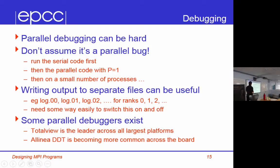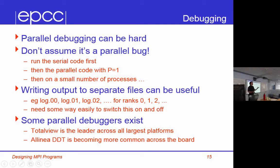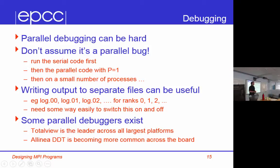Parallel debugging can be hard. First thing: don't assume it's a parallel bug. I've seen people spend weeks trying to find a bug because they assumed it crashed on 128 processes due to some complicated parallel issue, and it was just a normal bug — they were reading in the wrong file or hadn't initialized a variable. If your code crashes on a thousand processes, go back to the code that works. Run the serial code first, run with P equals one, then run on a small number of processes. Most bugs will show up on four, eight, or twelve processes.